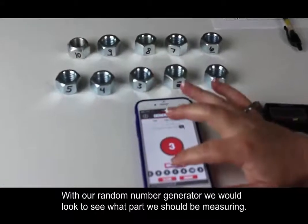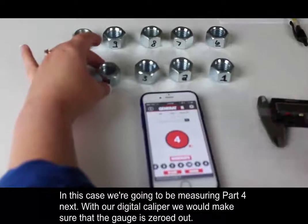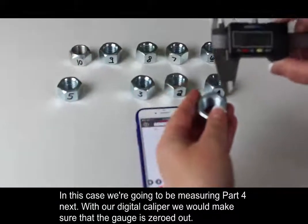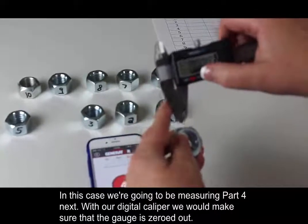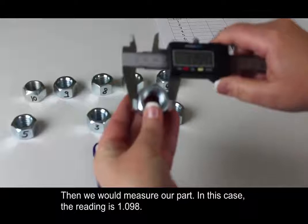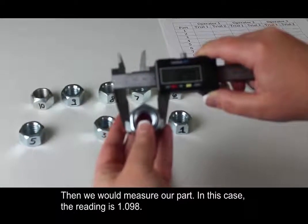So with our random number generator, we would look to see what part we should be measuring. In this case, we're going to be measuring part number 4 next. With our digital caliper, we would make sure that the gauge is zeroed out, and then we would measure our part. And in this case, the reading is 1.098.